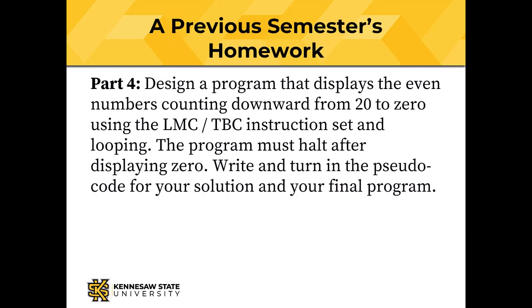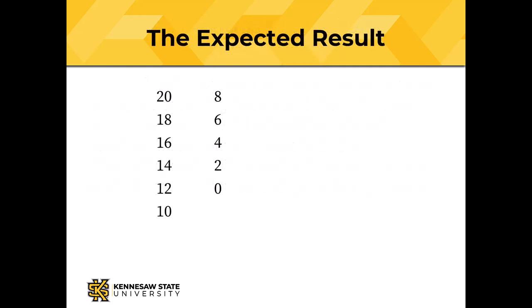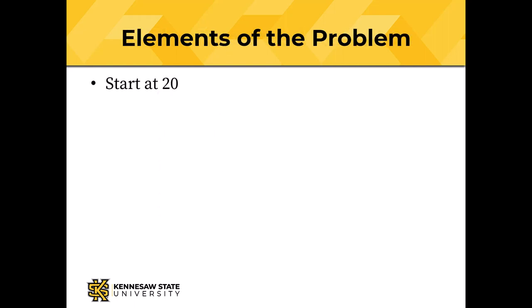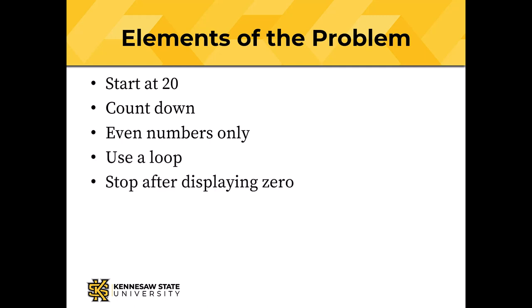For an example program, let's look at homework from a previous semester: design a program that displays the even numbers counting downward from 20 to 0 using the Tiny Binary Computer instruction set and looping. The program must halt after displaying 0. The expected results are 20, 18, 16, 14, and so on down to 6, 4, 2, 0. Remember that the problem tells us we have to use a loop — I can't just use OUT 20, OUT 18, and so on. The elements of the problem: start at 20, count down by 2 (even numbers only), use a loop, and stop after displaying 0.